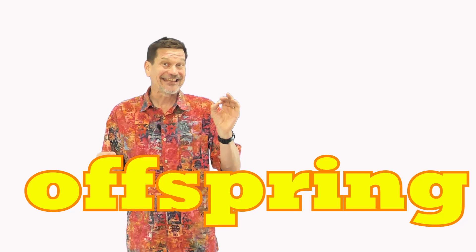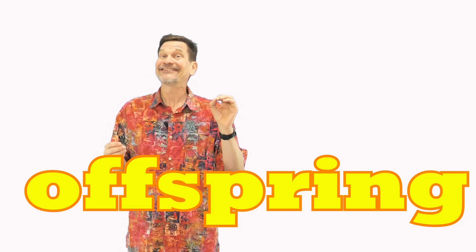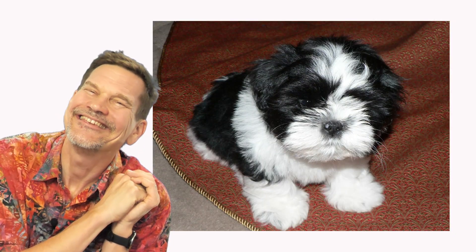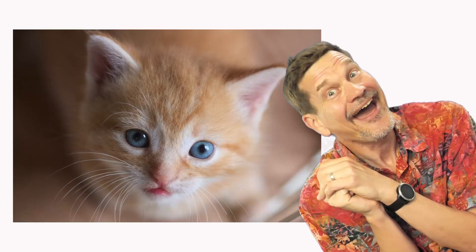Offspring are the descendants or the young of a living thing. Dogs have puppies. Oh look at the cute little puppy. Cats have kittens. Oh look at the cute little kitten.